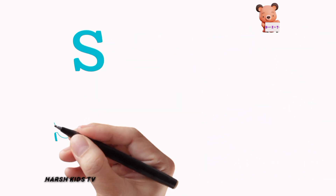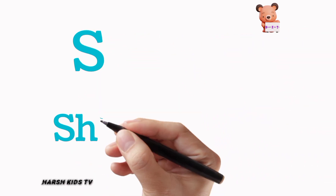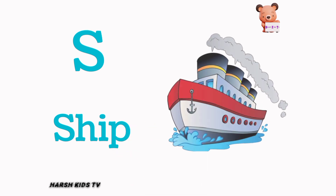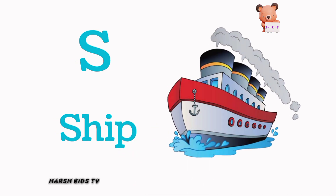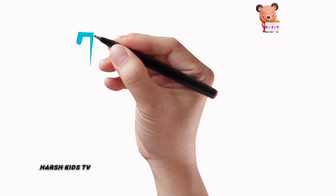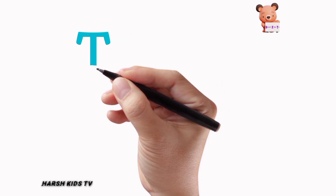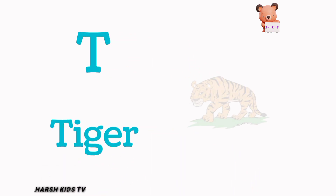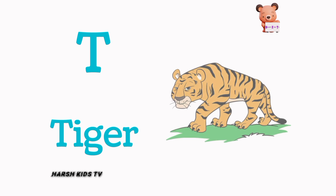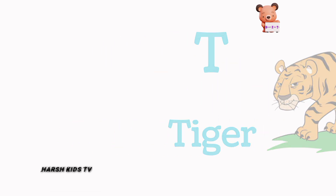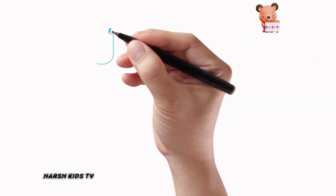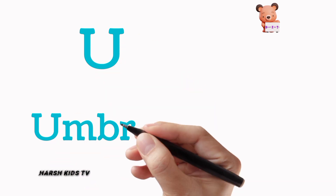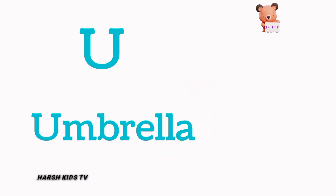S. S for Ship. T. T for Tiger. U. U for Umbrella.